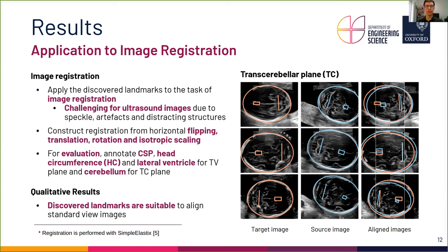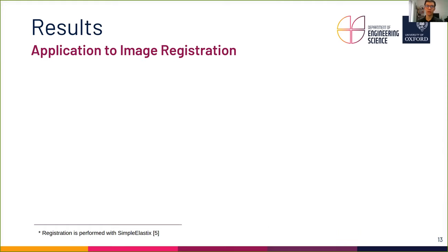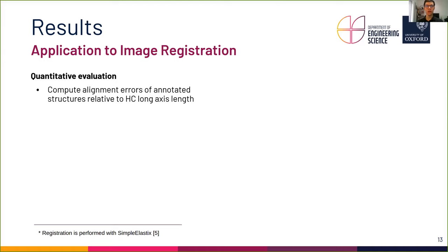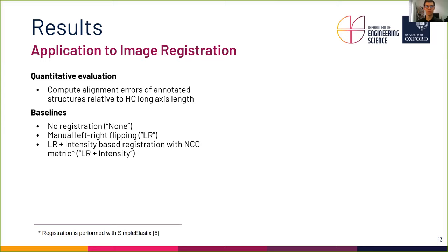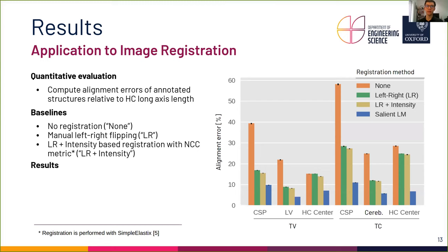This indicates that the discovered landmarks are indeed suitable to align the standard view images of the fetal head. For quantitative evaluation, we compute the alignment errors of the annotated structures relative to the respective length of the head circumference long axis. We implement three baselines: no registration at all; manual alignment of horizontal orientation through left-right flipping; and left-right flipping plus intensity-based registration with the normalized cross-correlation metric. The registration based on the proposed salient landmarks results in the lowest alignment errors compared to all baselines, indicated by the blue bars in the plot.